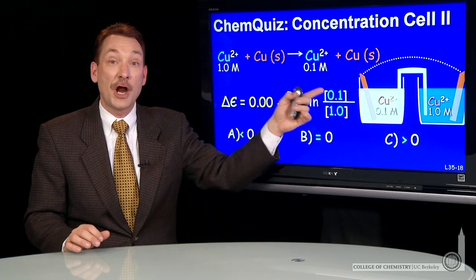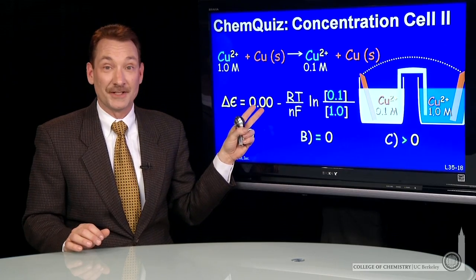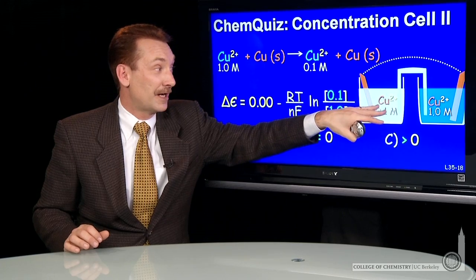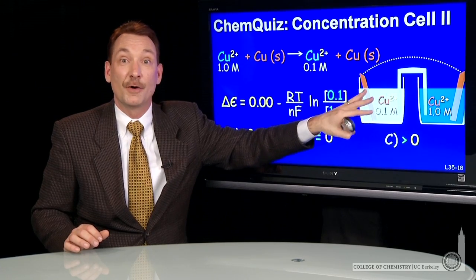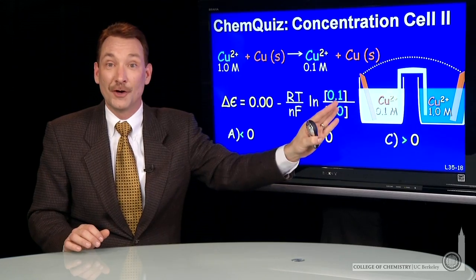Well, let's look at that. If we look at our Nernst expression, we would say the standard cell potential for this is 0, because the standard cell potential is the copper metal and copper ions, where the copper ions are at 1 molar on both sides. That would be 0 potential.